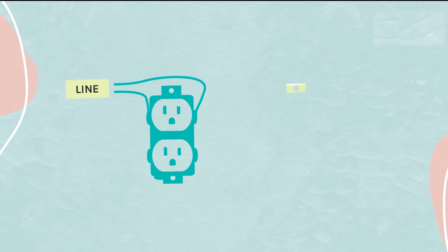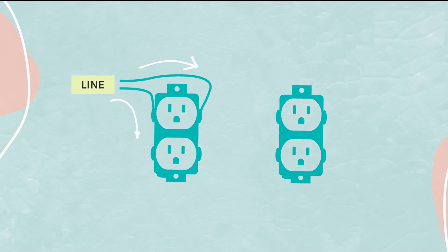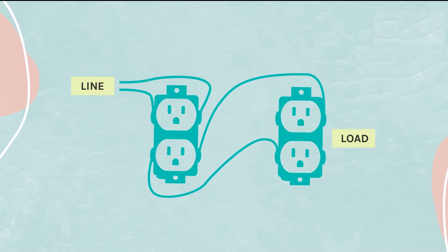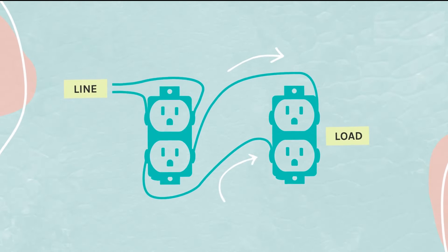To help visualize, line wires are also called upstream or incoming wires, and load wires are often referred to as downstream or outgoing wires.